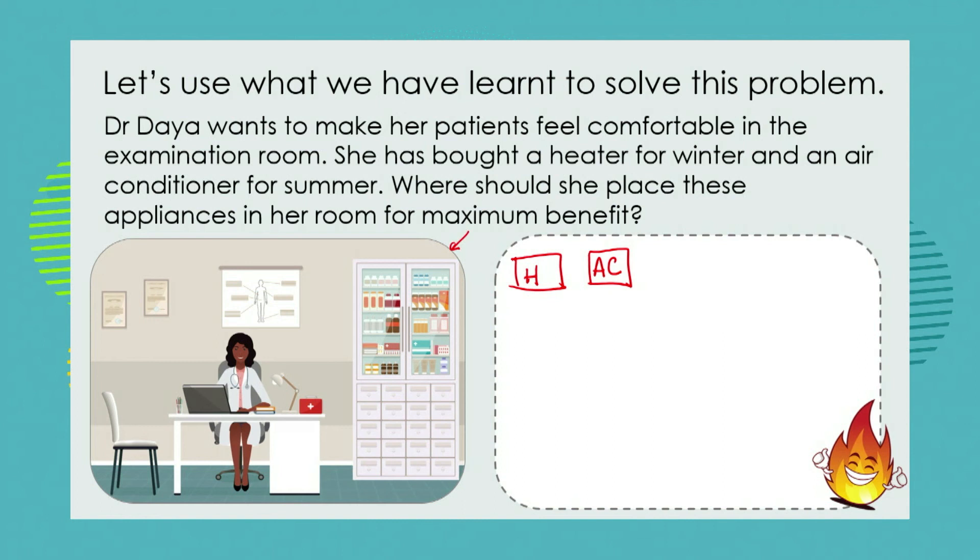Now here is her exam room. Where should she place these appliances in her examination room for maximum benefit? And remember maximum benefit is heating her room in winter and cooling it in summer. Now from what you know about convection currents we know that hot air or hot air particles rise. We know that cold air or cool particles are going to descend or drop.